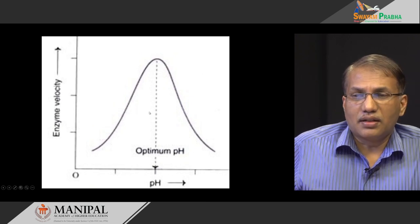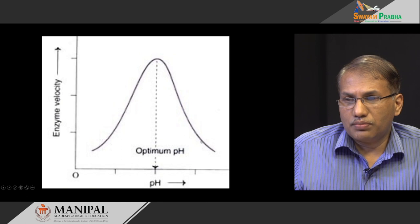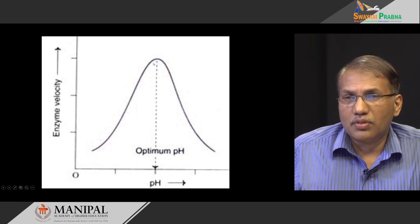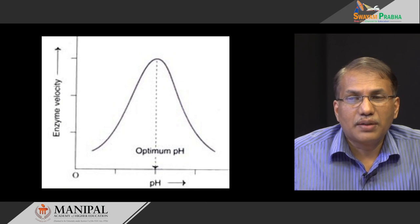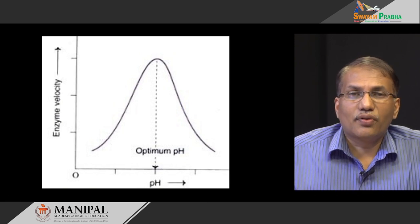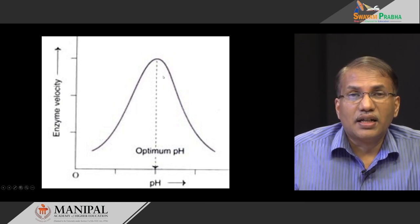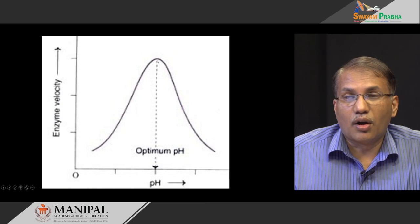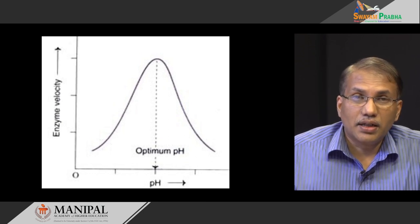The next important factor influencing the rate of enzyme reaction is pH. If you plot pH on the x-axis and enzyme velocity on the y-axis, you get a bell-shaped curve. The peak point of this graph is called the optimum pH, which is a signature for any given enzyme. We can identify or isolate an enzyme from a mixture of enzymes using its optimum pH. Every enzyme has a different optimum pH, even though all these enzymes may be present in the same biological system.